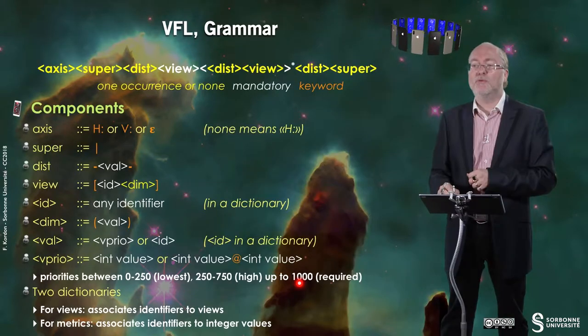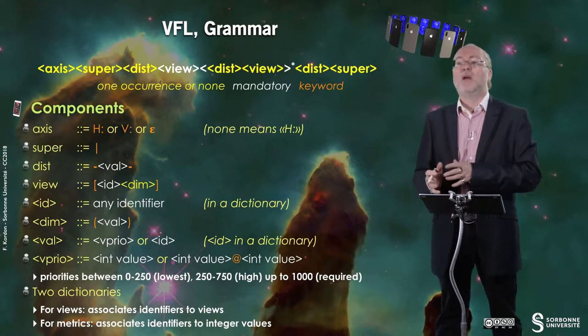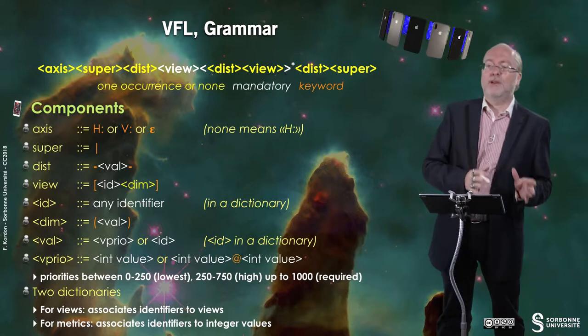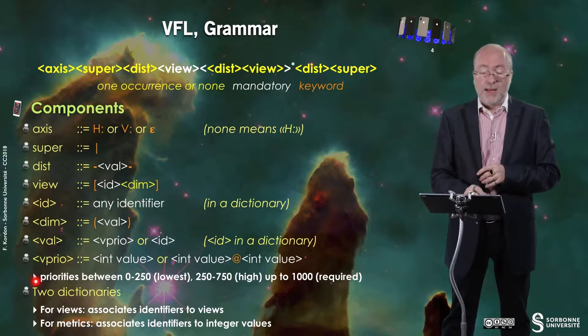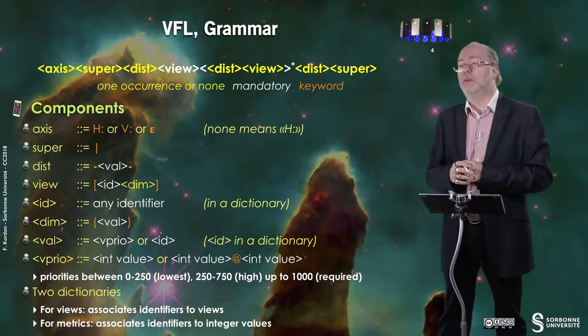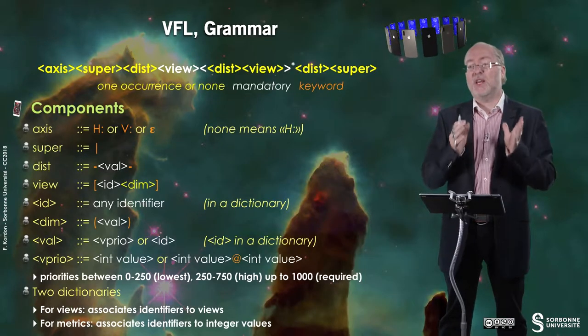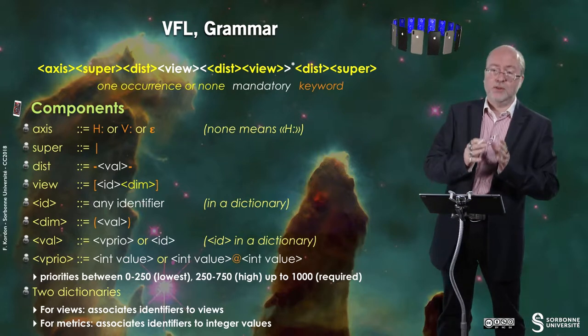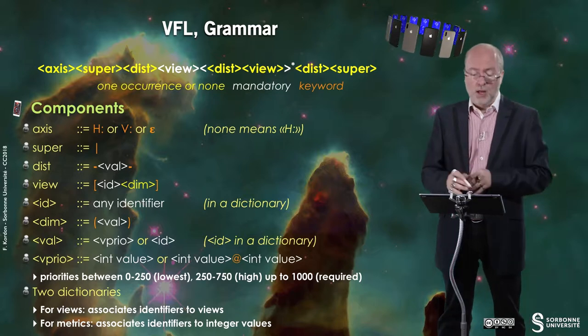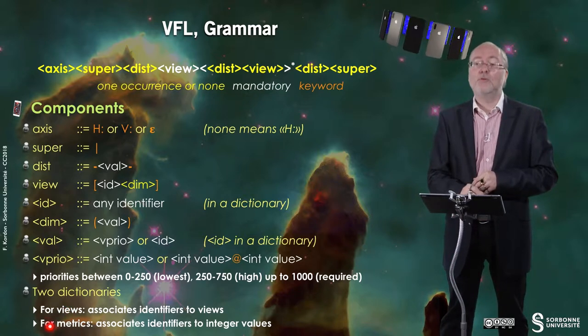The priority is a number between 0 and 1000 — 1000 means it's required, lower values mean high or low priority constants. You pass up to two dictionaries to the method that applies these constraints: one to associate identifiers to views, and another to associate identifiers to metrics — to real values. The first dictionary is mandatory, the second is optional.